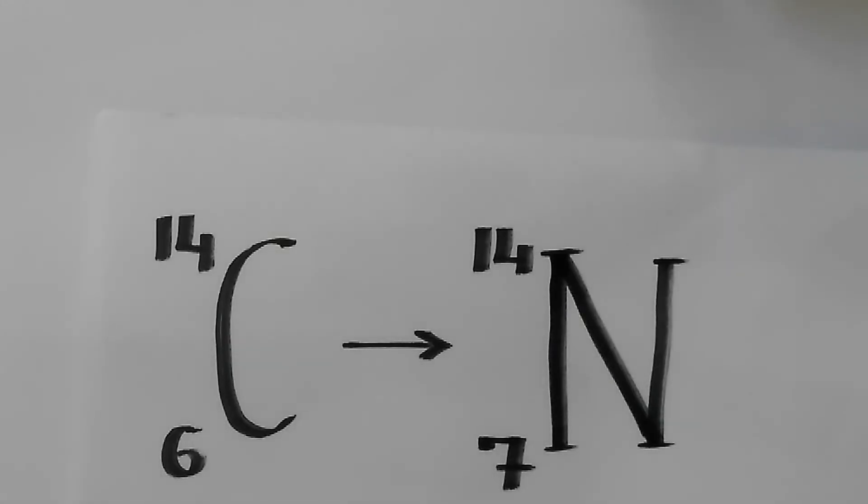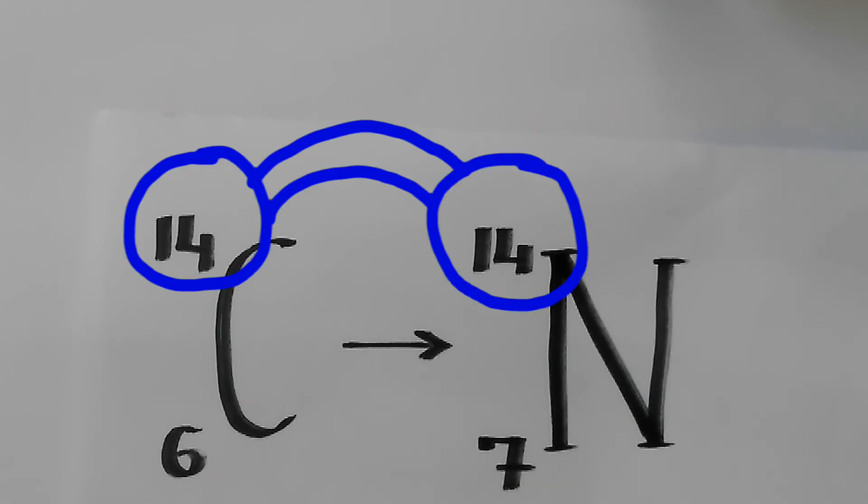In the given question, Carbon-14 gets converted to nitrogen, since the atomic number increased by 1 and the mass number remains 14.